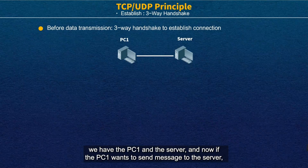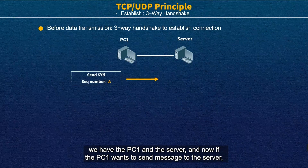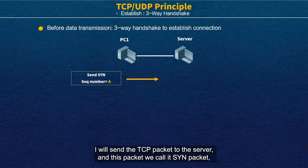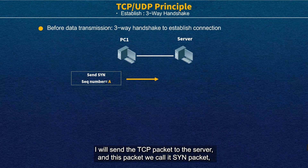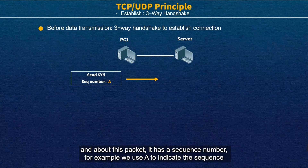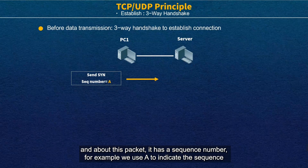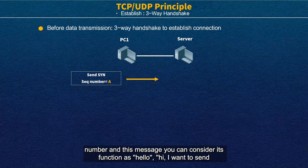Here we have PC1 and the server. If PC1 wants to send a message to the server, it will send TCP packets to the server, and these packets we call SYN packets. About these packets, we have the sequence number — for example, we use A to indicate the sequence number. This message functions like a hello: 'I want to send a message to you.'